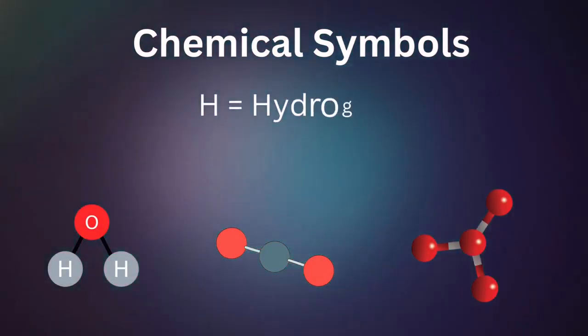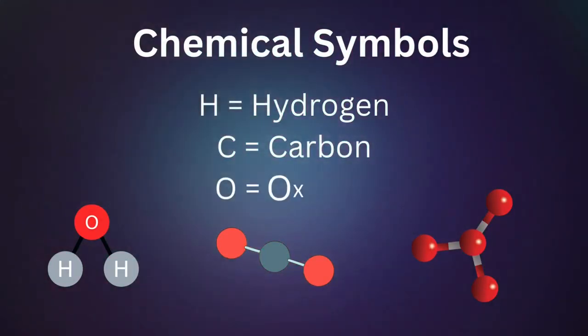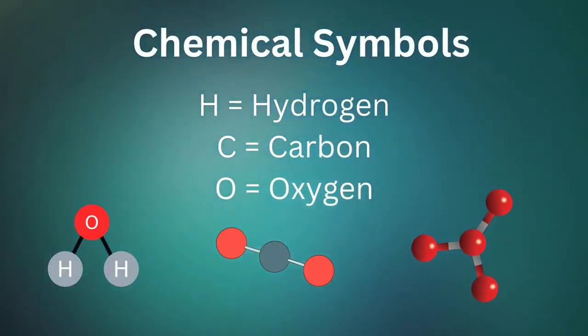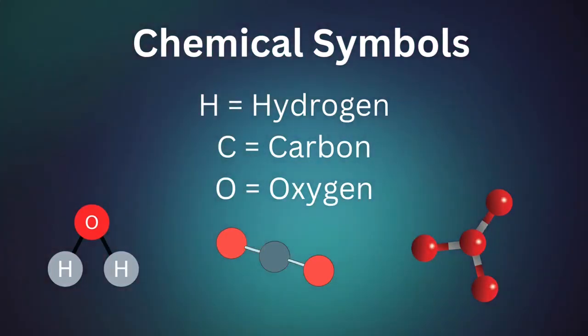For example, the chemical symbol for hydrogen is H, for carbon is C, and for oxygen is O.